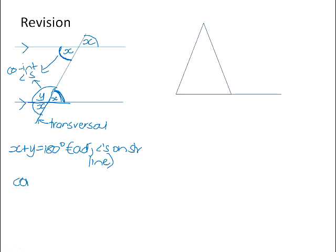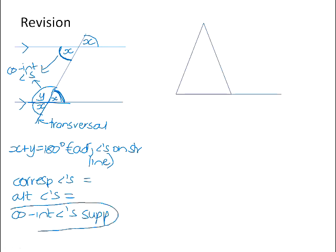What we have is corresponding angles are equal, alternate angles are equal, but co-interior angles are supplementary. They add up to 180 degrees, and that's the one we often forget about. Co-interior angles are not equal, but they have a sum of 180 degrees.